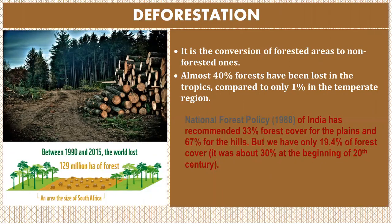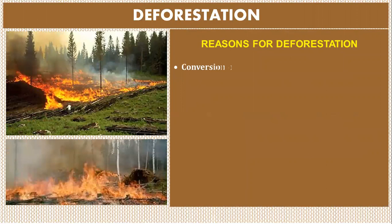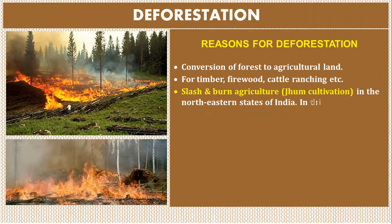Forest cover was about 13% at the beginning of the 20th century. Reasons for deforestation include: conversion of forest to agricultural land, timber, firewood, cattle ranching, and slash-and-burn agriculture (jhum cultivation) practiced in the northeast states of India, where farmers cut down forest trees and burn the remaining plants, using the ash as fertilizer and the land for farming or grazing.